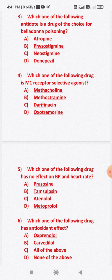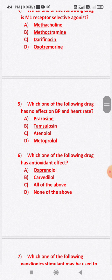Tamsulosin is the only adrenergic blocker among these which has no effect on BP and heart rate. Tamsulosin does not cause changes in heart rate and BP. It is a uroselective drug — an alpha-1A and alpha-1D blocker.